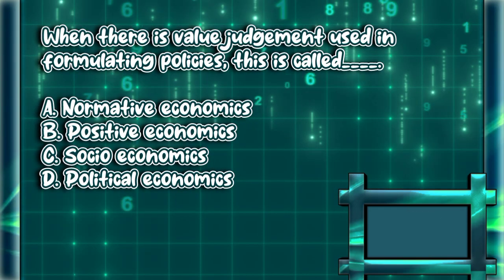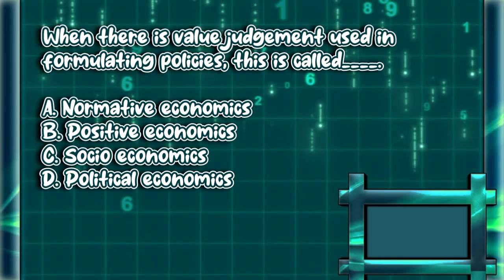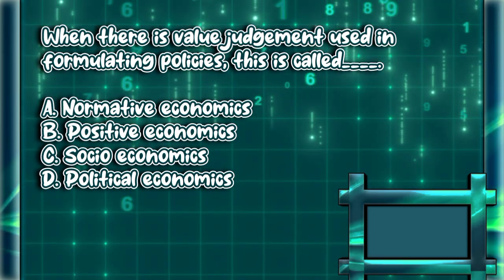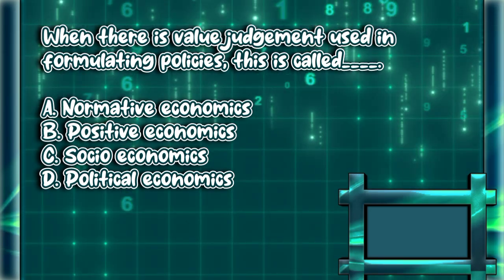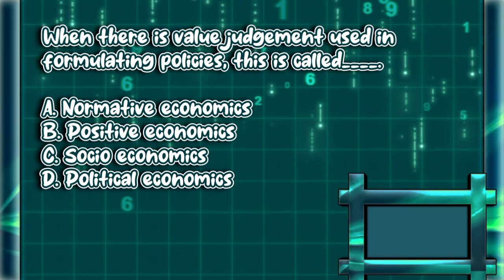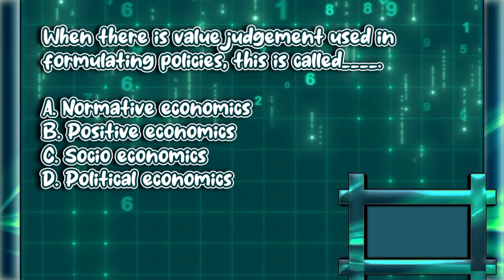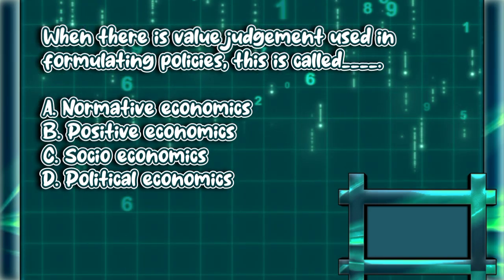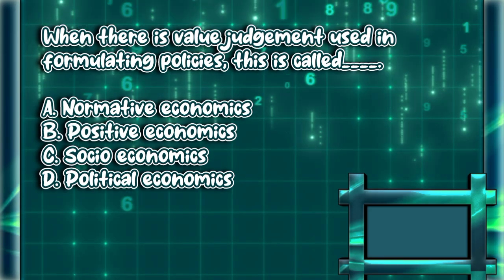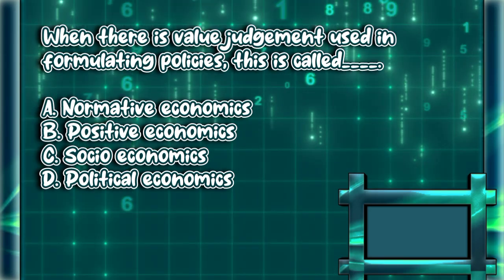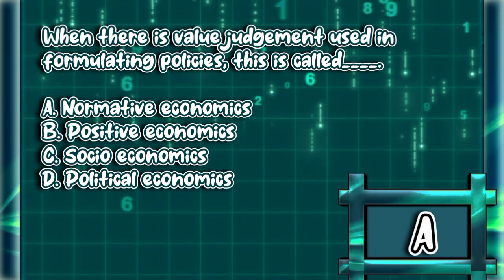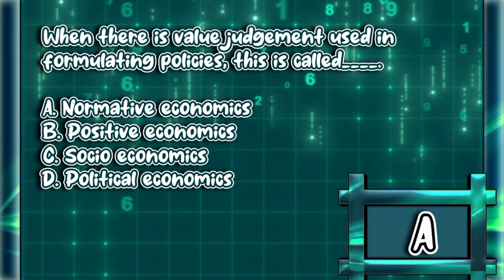When there is value judgment used in formulating policies, this is called: A. Normative economics. B. Positive economics. C. Socioeconomics. D. Political economics. The answer is letter A.